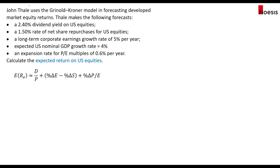Now let's look at an example. Joan Tell uses the Grinold-Kroner model in forecasting developed market equity returns and makes the following forecasts: a 2.4% dividend yield on U.S. equities, a 1.5% rate of net share repurchases for U.S. equities, a long-term corporate earnings growth rate of 5% per year, an expected U.S. nominal GDP growth rate of 4%, and an expansion rate for PE multiples of 0.6% per year.